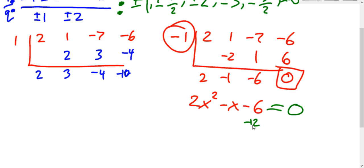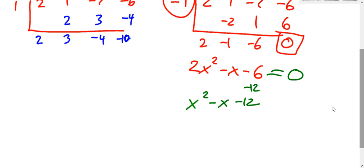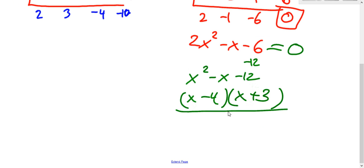So to factor this, I would do bottoms up. Multiply the two times negative six is negative twelve. So x squared minus x minus twelve. We're looking for two numbers that multiply by negative twelve, add to be negative one. So negative four, positive three.